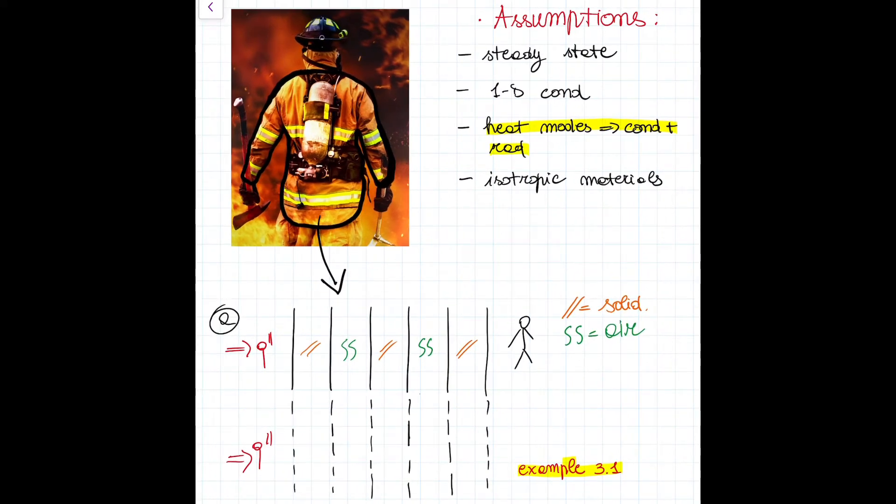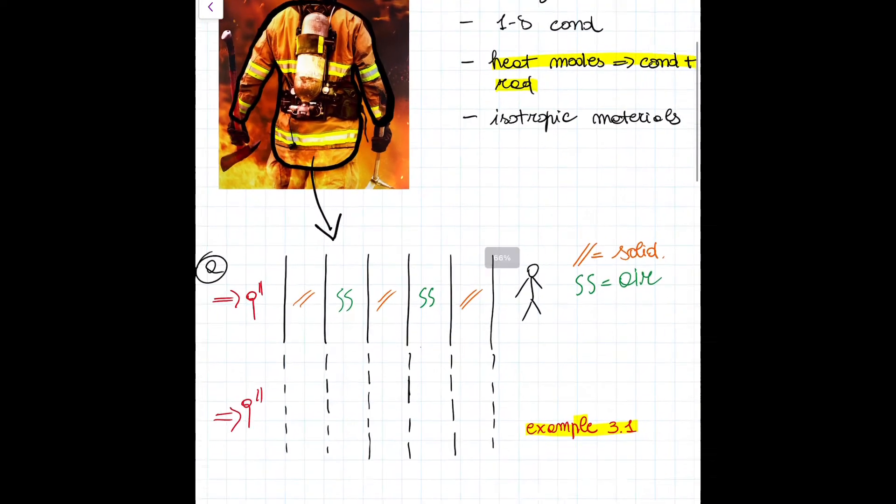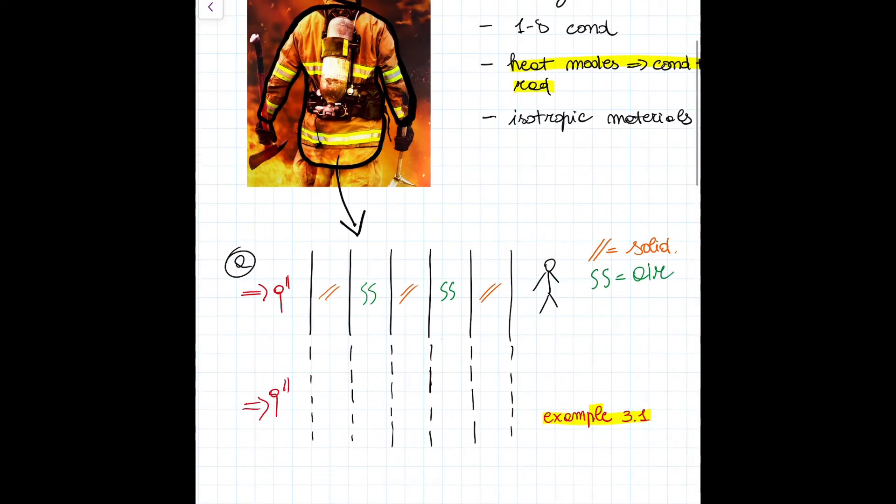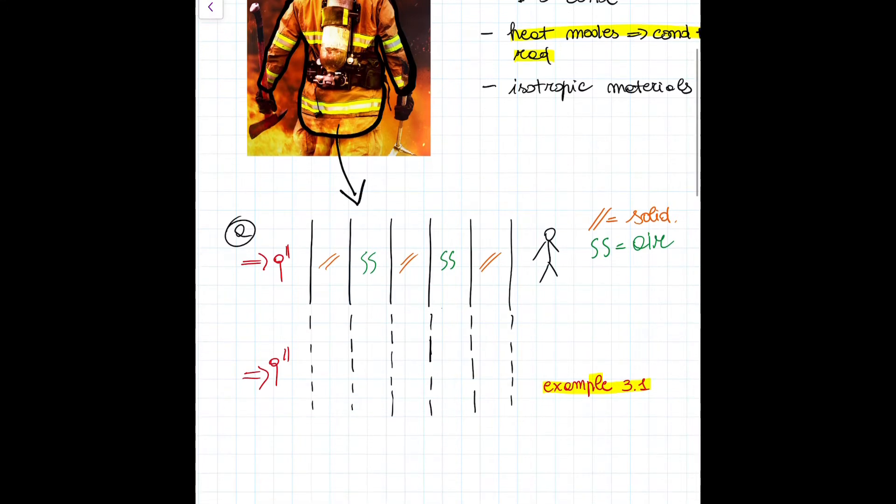I have already done that before starting the recording. As you can see here, I redrew the firefighters' jacket and labeled with two dashed lines the solid parts and with two squiggly lines the air gaps. Now, let's understand what task A asks us to do.